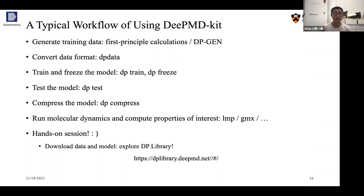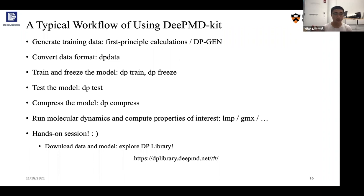After training, we freeze it to obtain a file with .pb format storing the neural network parameters. Then we test the model to see if the testing error is small enough. If we have a satisfying model, we can compress it using DP compress, which tabulates the embedding network to save inference time — the compressed model drives molecular dynamics much faster. Then we run the molecular dynamics and compute properties of interest, which is the same as standard MD with empirical force fields.